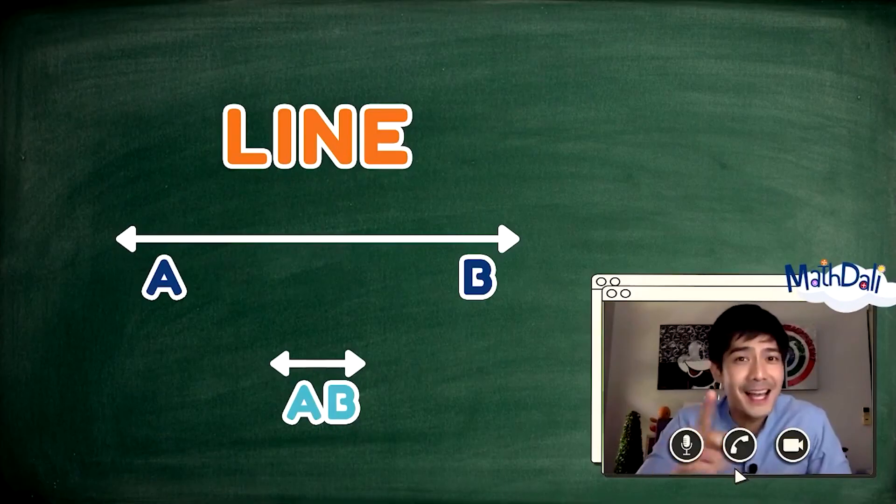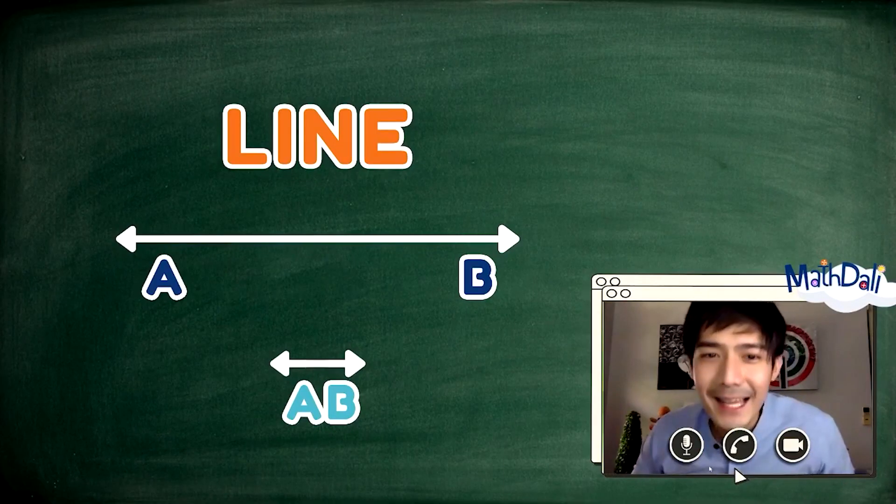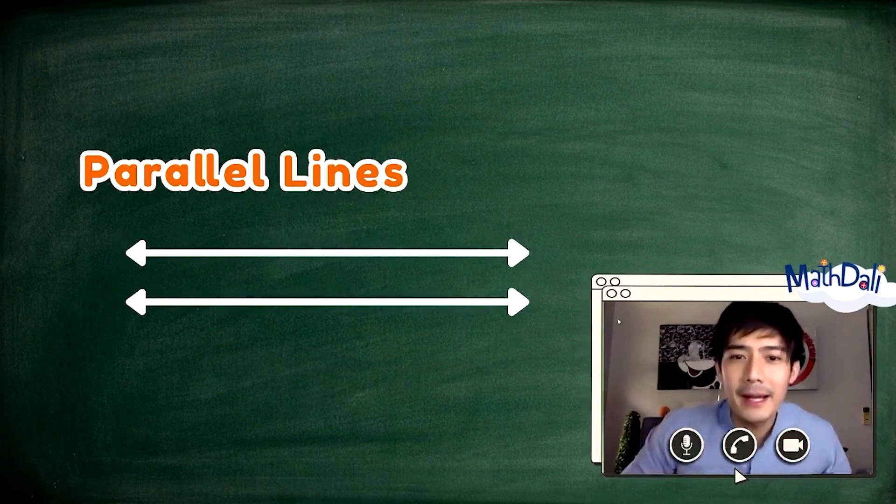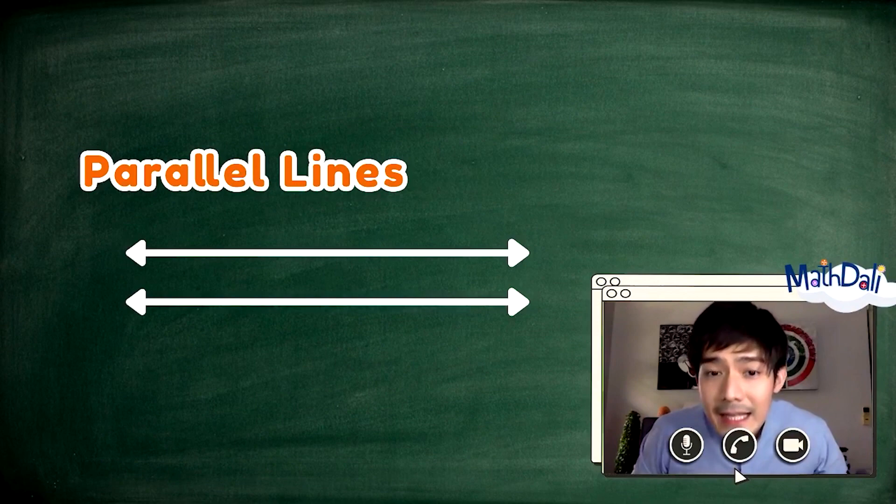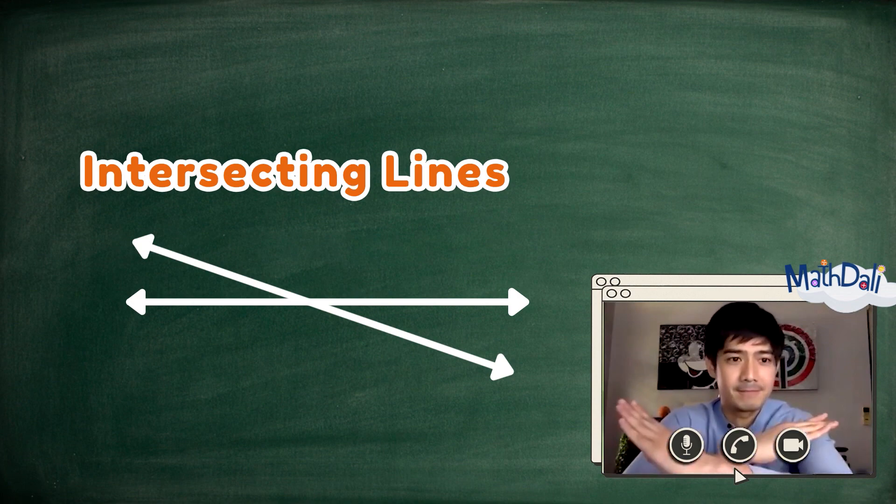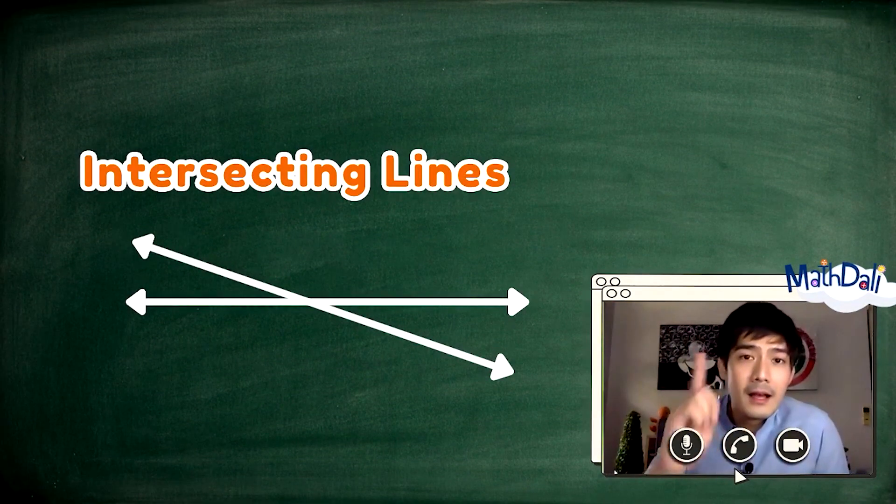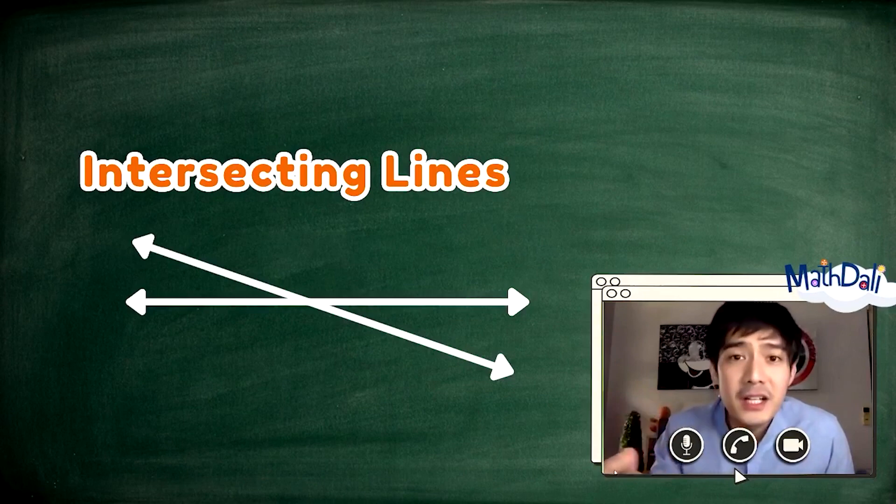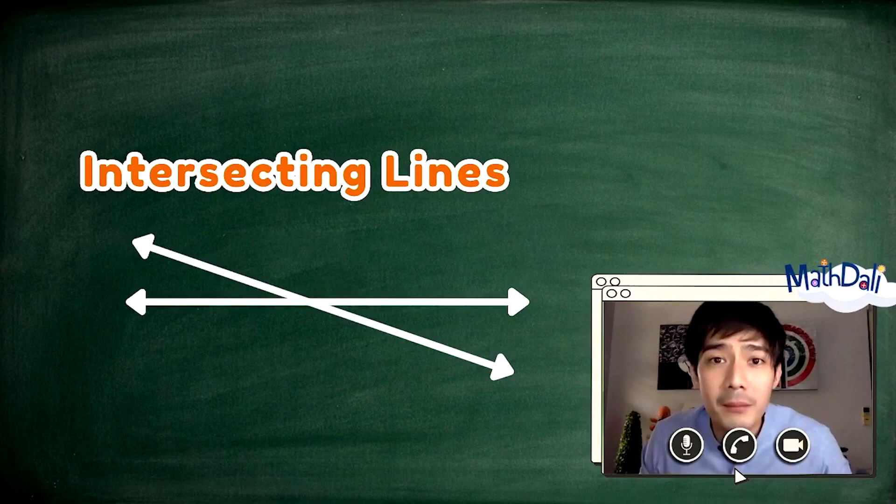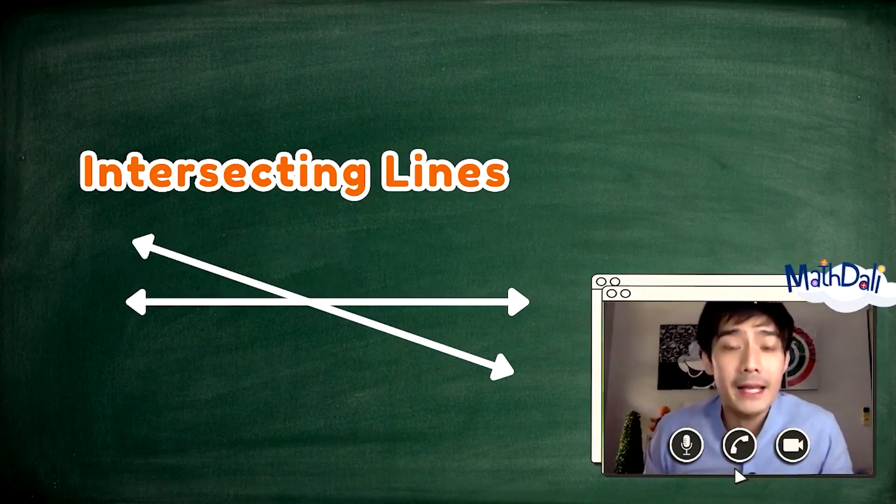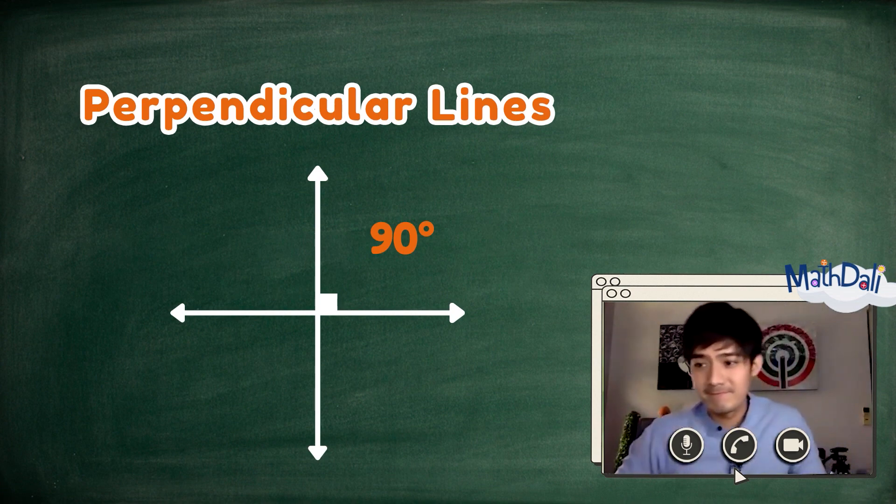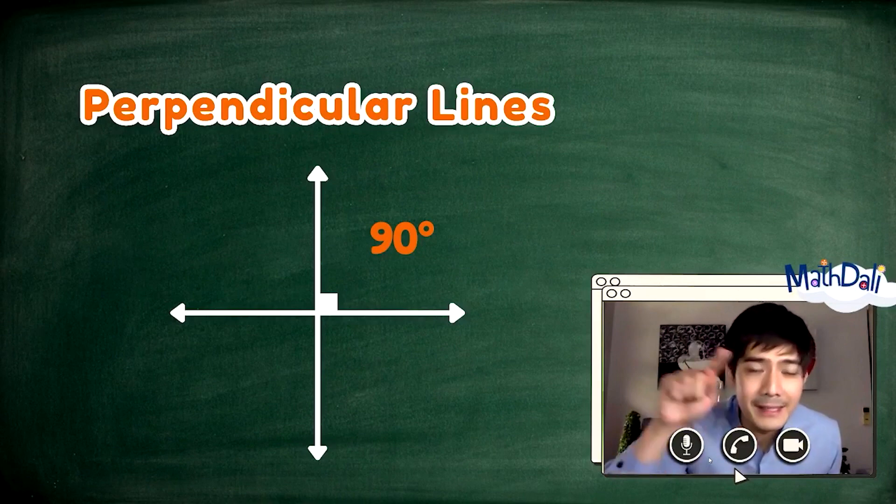Madali! Umulin natin. Ang parallel lines, ang tawag sa mga linyang hindi nagtatagpo. Ang tawag naman sa mga linyang nagtatagpo sa isang point ay intersecting lines. Ayan. Pero, isang tipo ng special intersecting lines. Kapag ang intersecting lines ay nagpoform ng right angles, tinatawag itong perpendicular lines. Ayan. Kailangan may 90 degrees.